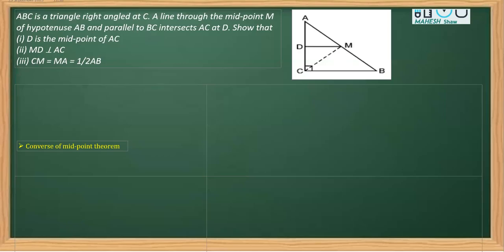We have one question from chapter Quadrilaterals, Class 9th. It says ABC is a right angle triangle at C. As you can see in the figure, angle C is given as 90 degrees. A line is drawn through the midpoint M of the hypotenuse AB — AB is the hypotenuse and M is the midpoint, which means AM is equal to BM.